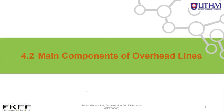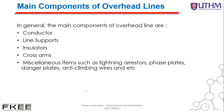The main components of an overhead line consist of the conductor, line support, insulator, cross arm, and also miscellaneous items such as lightning arrestors, face plates, danger plates, anti-climbing wire, and access straps.